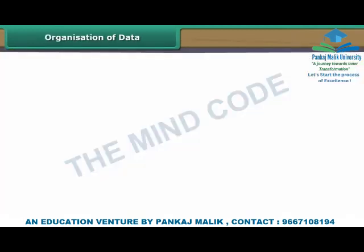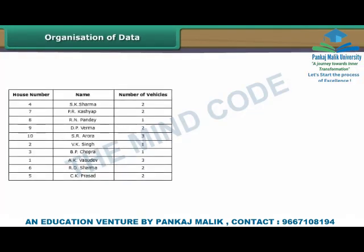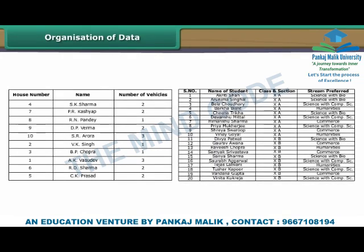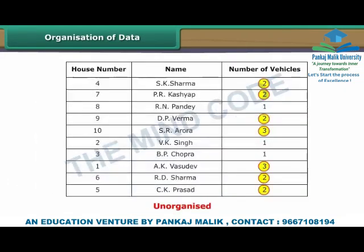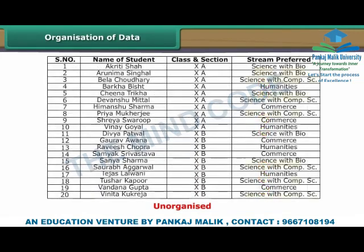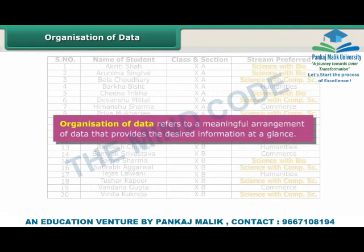Organization of data. The data collected by the RWA of the residents and the data provided by Sheetal to the academic in charge are unorganized. Why? The former does not tell the RWA at one glance the number of residents who own more than one vehicle. Similarly, the latter does not tell the academic in charge at one glance the number of students who have opted for science.